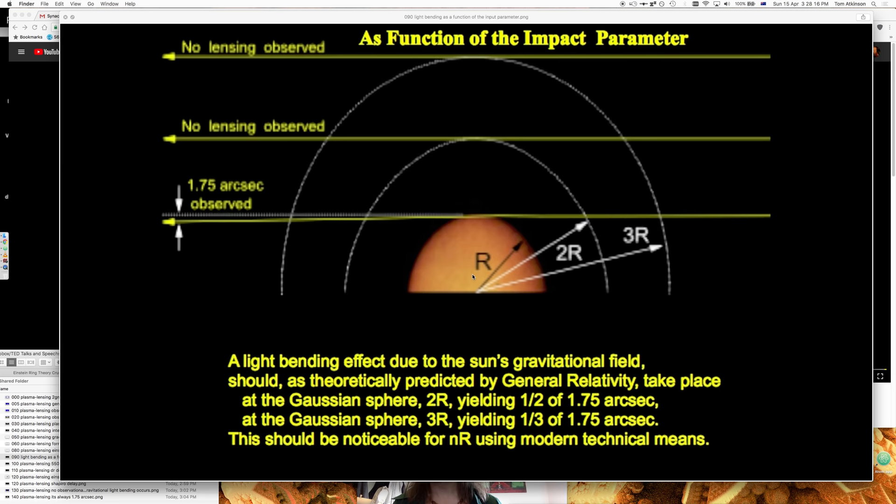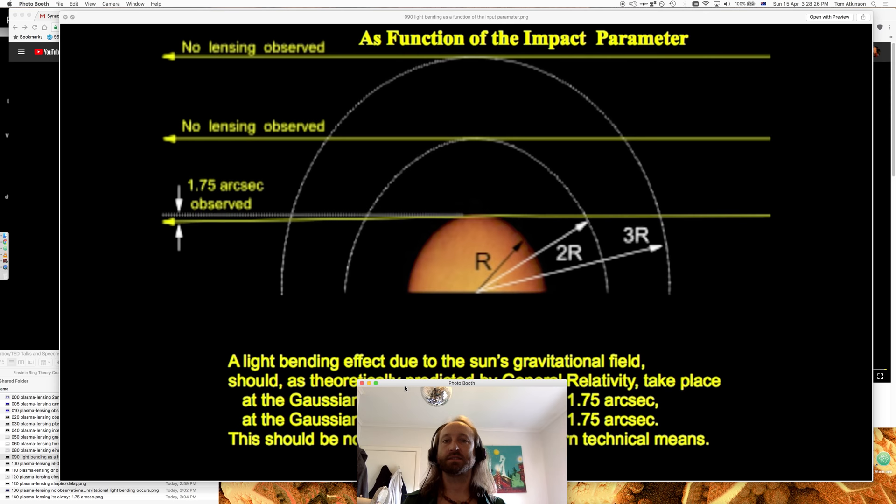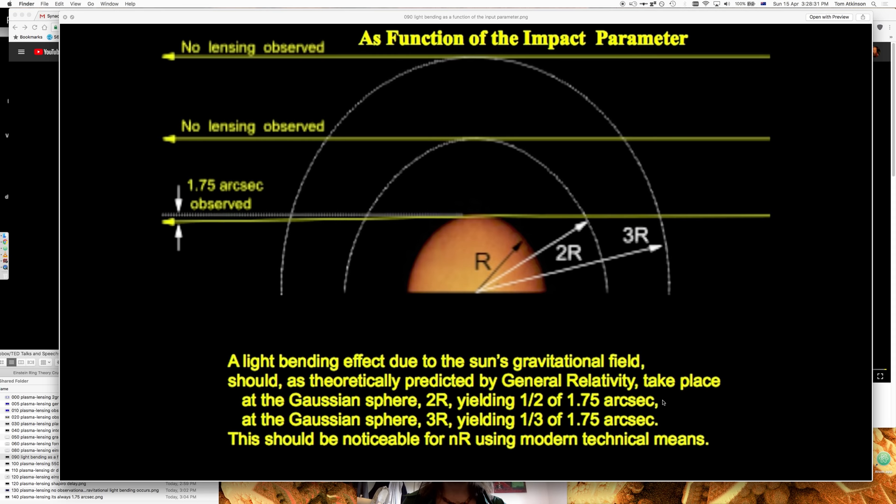So, Dr. Doughty has shown us that basically, if it was done due to the gravitational field, 2R and 3R, yeah right, we'd have quite a big bending going on around here. But it's not.